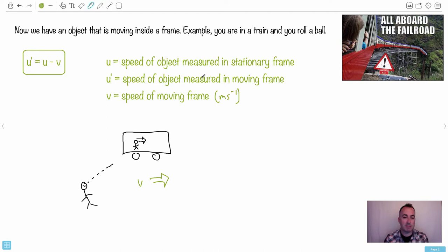Now within this train, you could have something happening. Like maybe you're walking maybe. So maybe you decide to walk some speed. So let's look at what goes on here. V is going to be the speed of the moving frame. In other words, in this case, v is the speed of the train. So that'll be in meters per second. Now u prime, that's going to be the speed of the object measured in the moving frame.